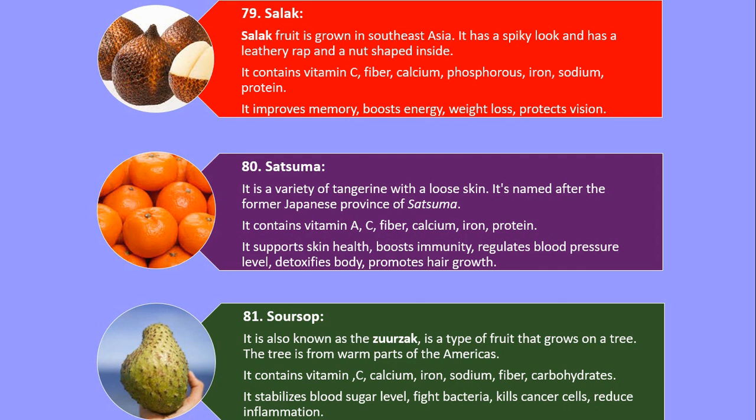Number 80. Satsuma. It is a variety of tangerine with a loose skin. It is named after the former Japanese province of Satsuma. It contains vitamin A, C, fiber, calcium, iron and protein. It supports skin health, boosts immunity, regulates blood pressure level, detoxifies the body, and promotes hair growth.